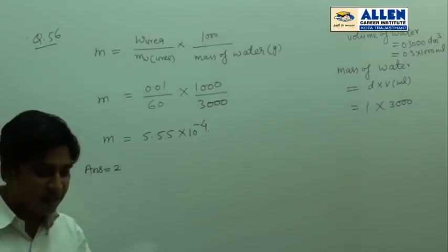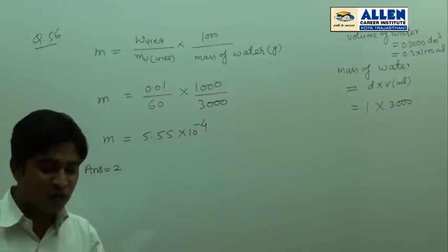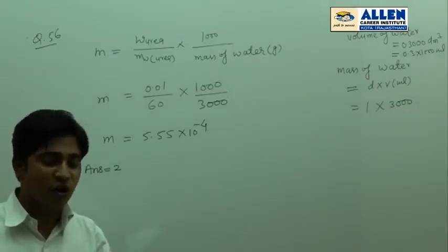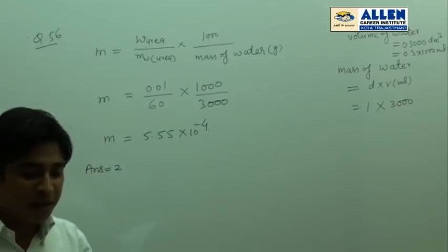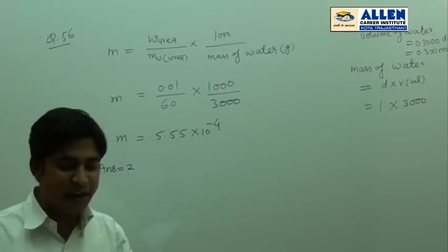In question number 56, the molarity of a urea solution in which 0.01 gram of urea is added to 0.3 decimetre cube of water at 25°C is?